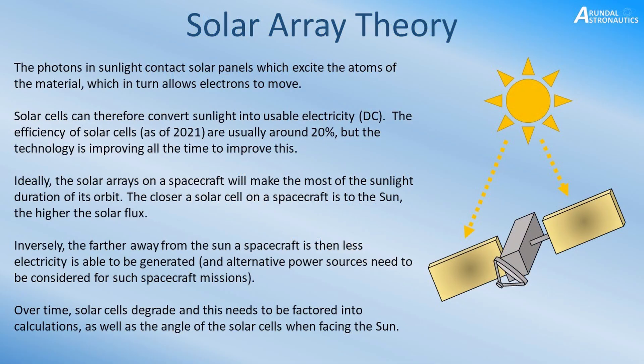For the purposes of this tutorial I'm going to quickly go over what solar array theory is about so you can appreciate what's going on, and that way we can look at the MATLAB code and the GUI and understand where we need to get some of the parameters. Basically, the idea behind a solar array is that photons in sunlight come into contact with the solar panels, which excites the atoms of the material the solar panel is made of, and this in turn makes the electrons inside move. This movement of electrons allows the creation of DC electricity, which is what could be used to power spacecraft systems.